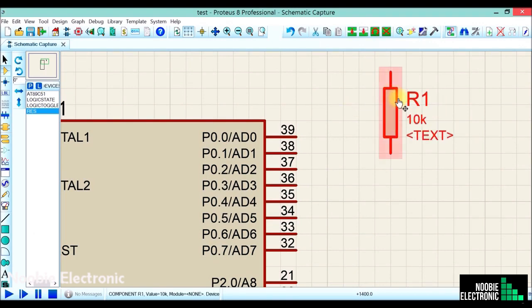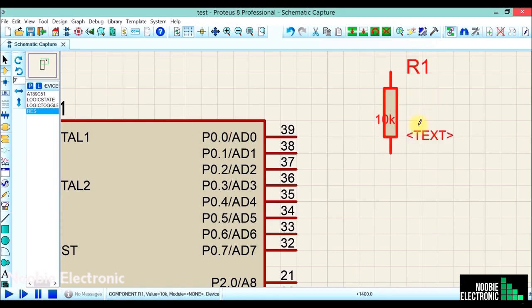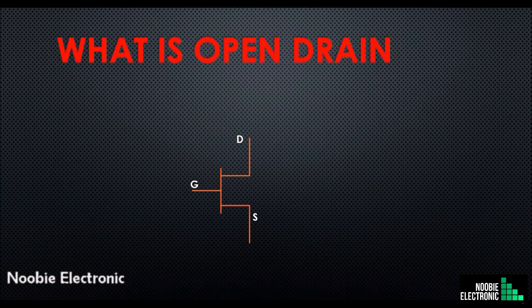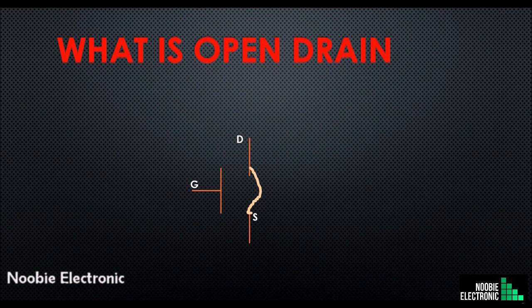I'll try to explain open drain first, then you can easily understand why we need external pull-ups at port 0. As mentioned earlier, open drain is simply a transistor that connects to ground. Whenever we apply a high input at the gate, drain and source are shorted, and whenever we apply a low input at the gate, drain and source are disconnected.